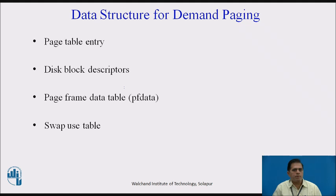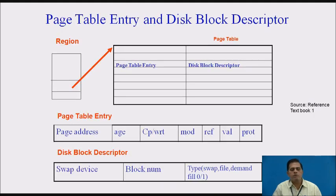The data structures required for demand paging are: page table entry, disk block descriptor, page frame data table (PF data), and swap use table, as shown in the figure. The region points to the page table where page table entries are made and all page information is stored. The page table contains the page address, age (since pages are copied from main memory to disk), copy-on-write flag, modify bit, reference bit, validity bit, and protections. These are the fields contained in the page table entries.